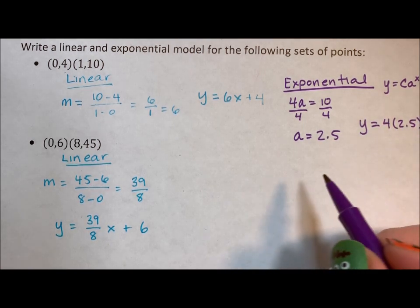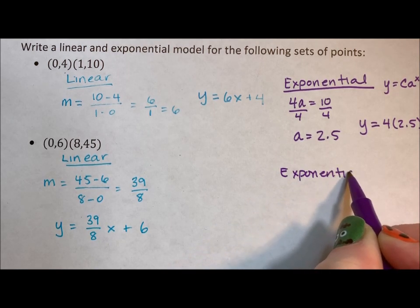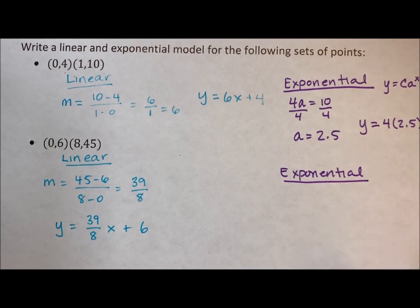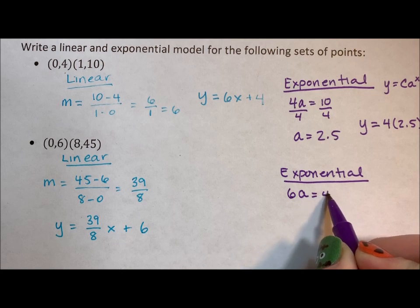So y is equal to 4 times 2.5 to the x. All right, now for our exponential down here. Again, we are multiplying to move forward. We start at 6, we multiply by a, we move up to 45.